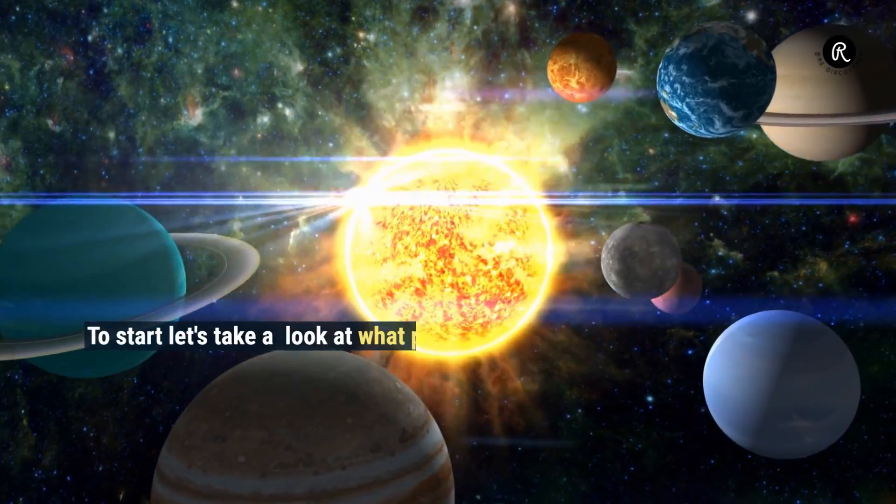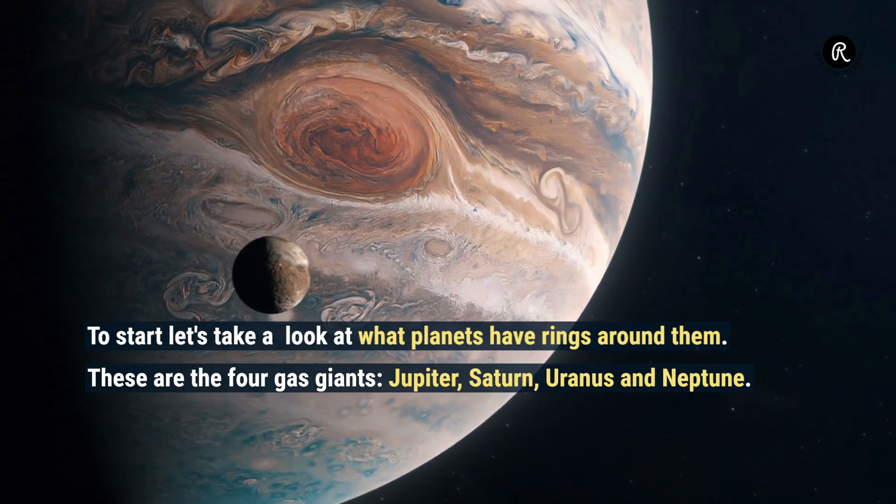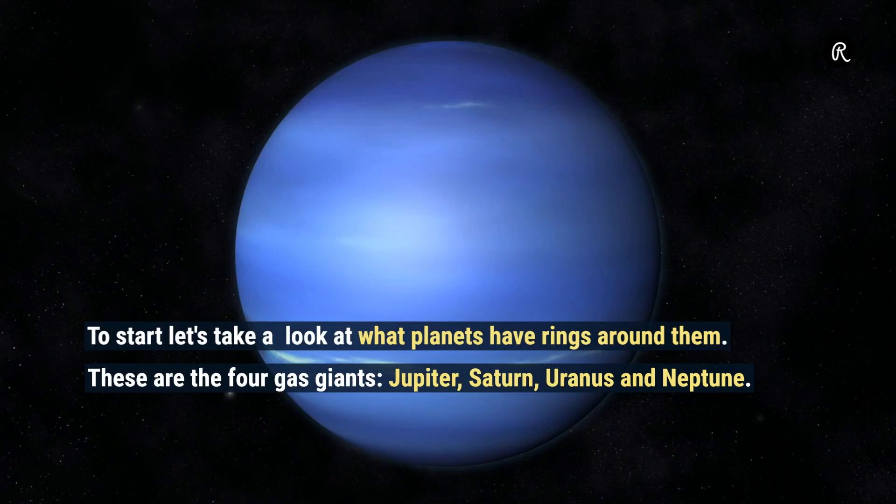To start, let's take a look at what planets have rings around them. These are the four gas giants: Jupiter, Saturn, Uranus, and Neptune.